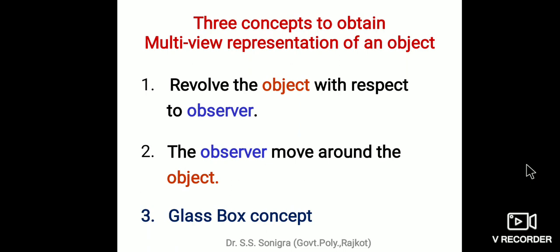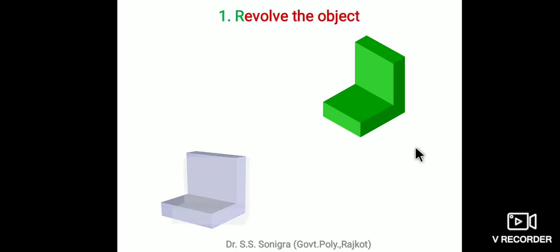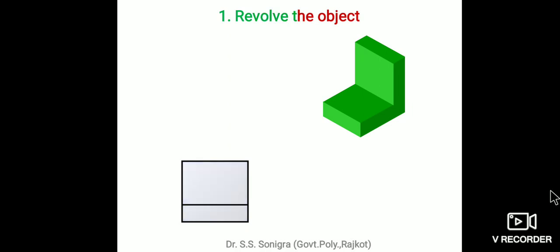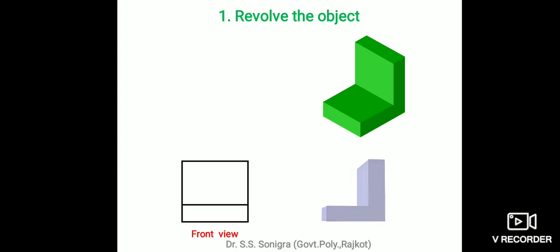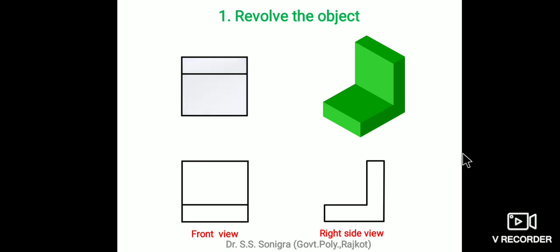The first concept — revolve the object with respect to the observer — means we tilt the object. Revolve this object to get the front view, revolve to the side to get the side view, and revolve to get the top view. These are the three views. If you look from here, this rectangle and this rectangle are the same; the bigger rectangle is represented in the top view, and from the right side this reverse-L shape is visible.